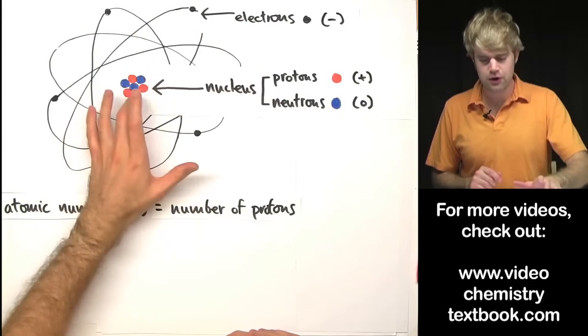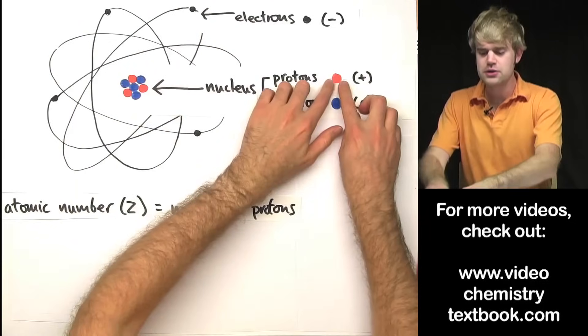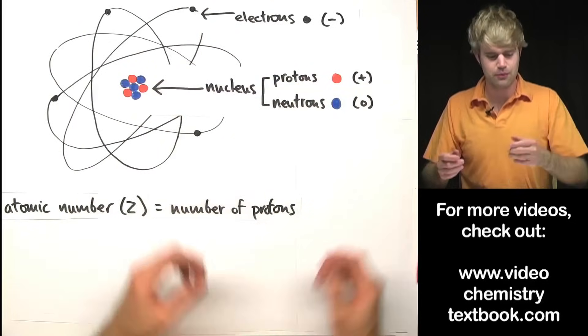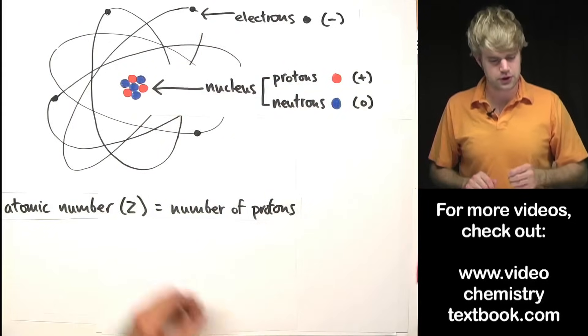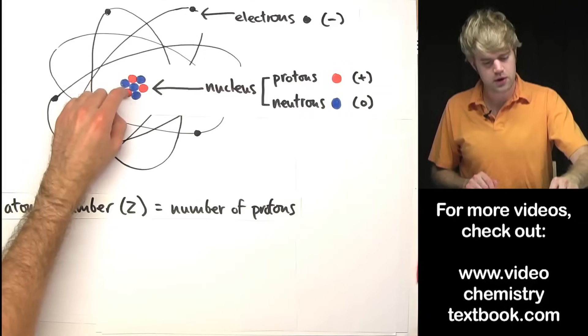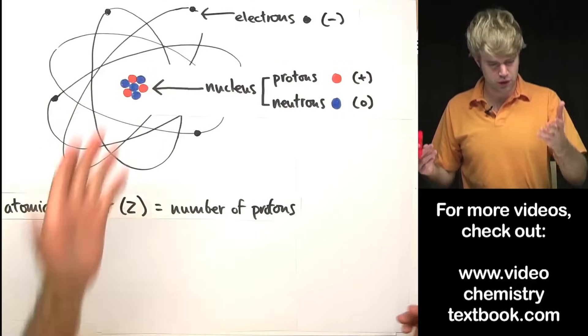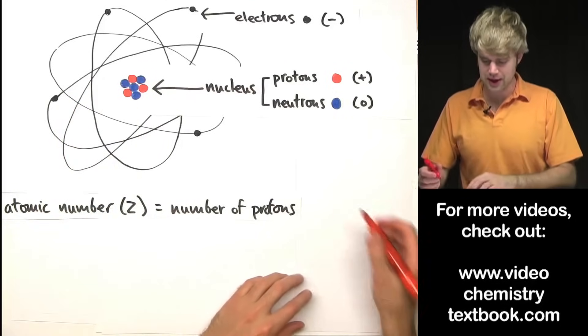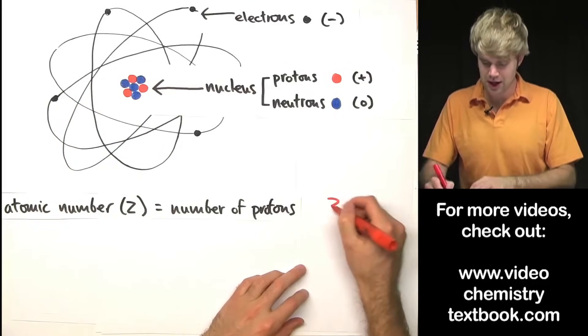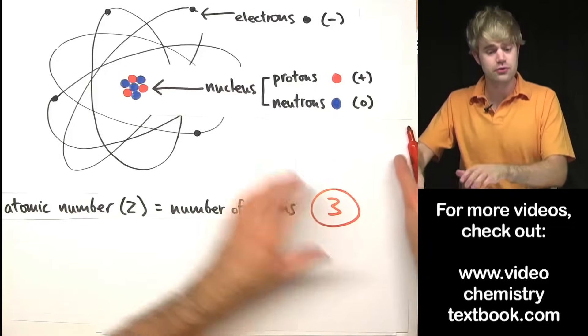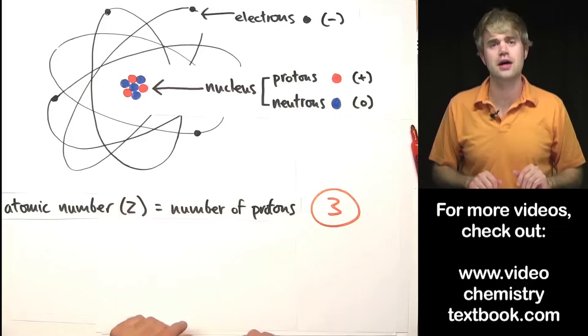In my diagram here, I'm using these red circles to represent protons. So I have one, two, three protons in this atom. So the atomic number is going to be three for this atom here.